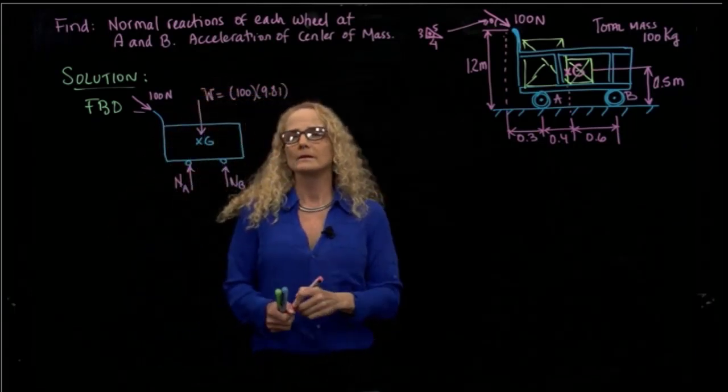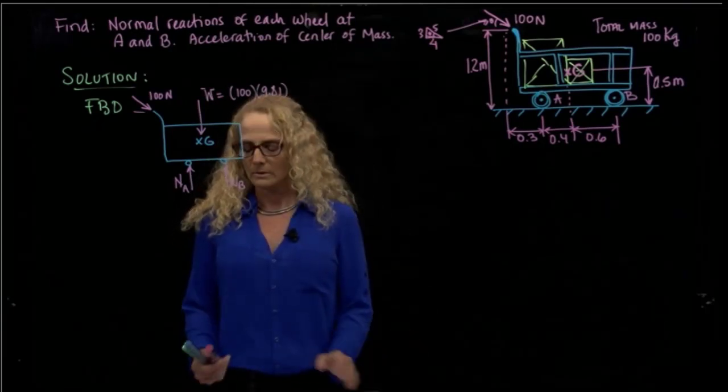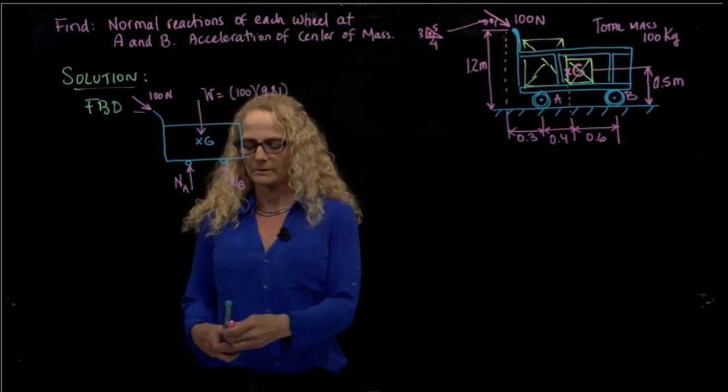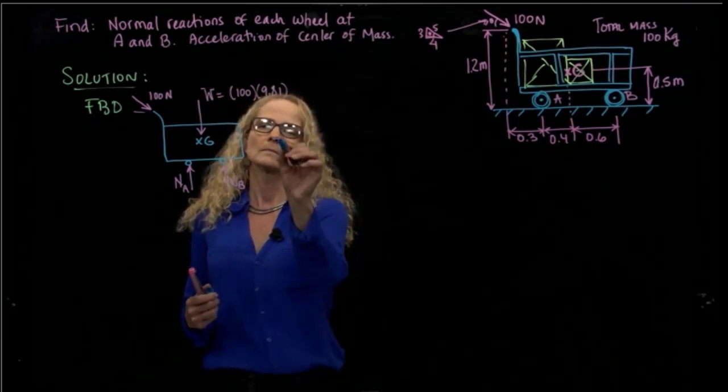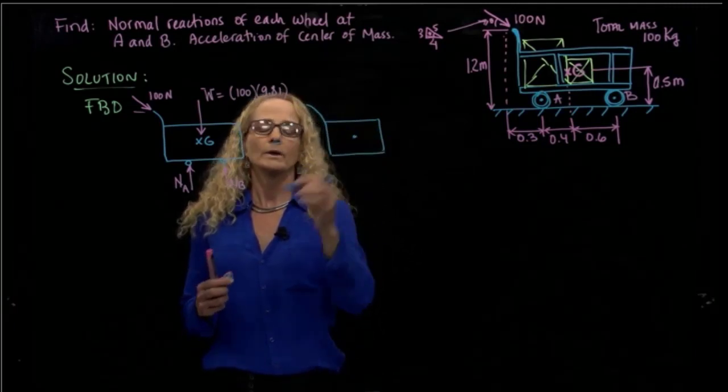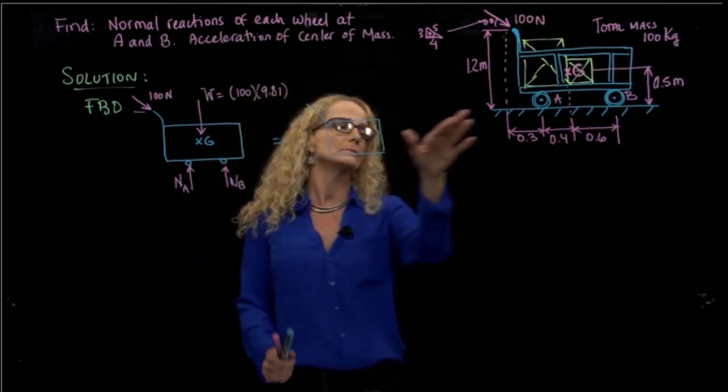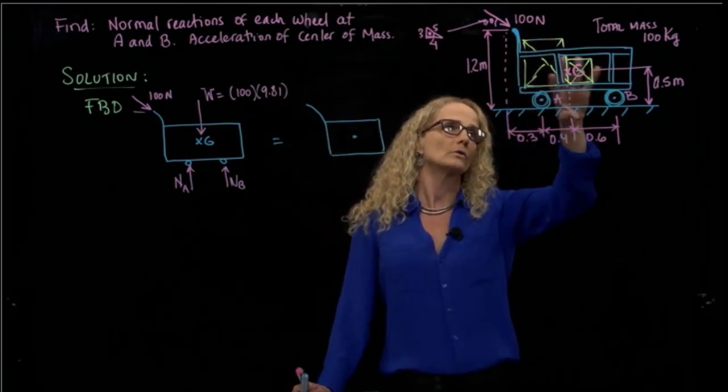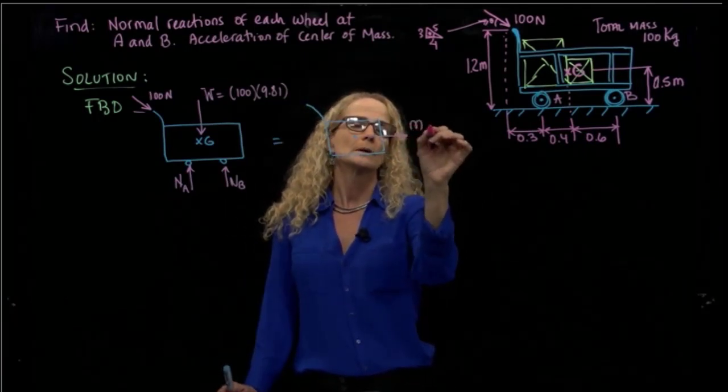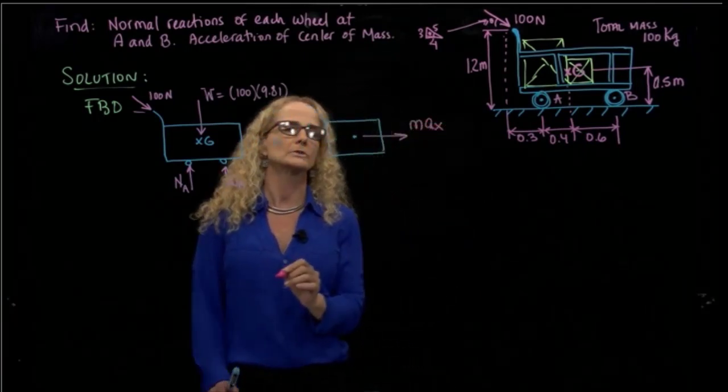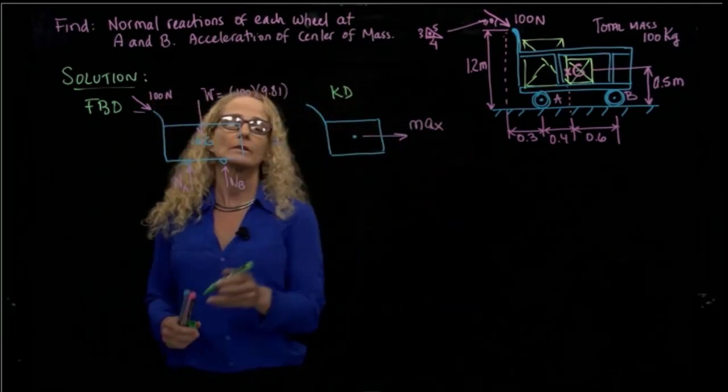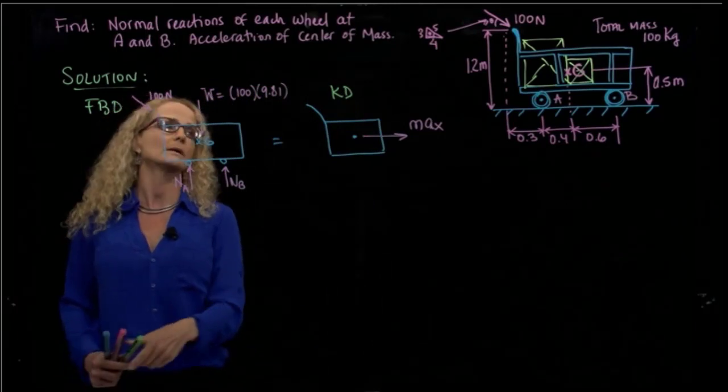So that's our free-body diagram, and we will make it equal to our kinetic diagram. So the kinetic diagram will be very similar. And we only have one acceleration, since this is not allowed to move in the vertical direction or rotate. We only have one kinetic force, which is mass times the acceleration in X direction. This is our kinetic diagram.